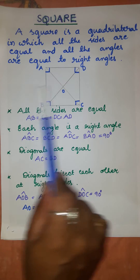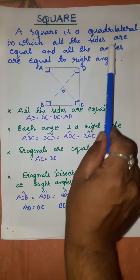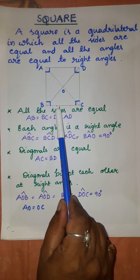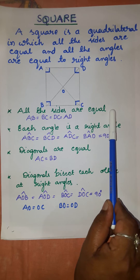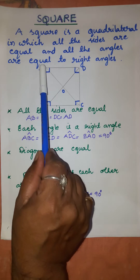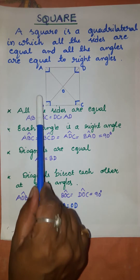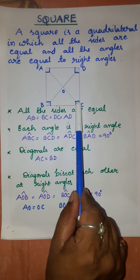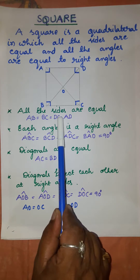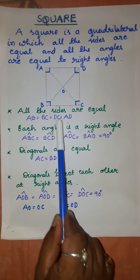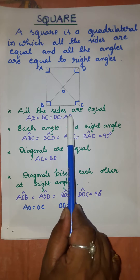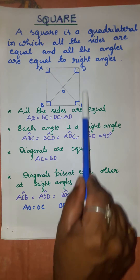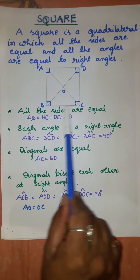Let us focus on the important properties of a square. All the sides of a square are equal. Side AB is equal to side BC, side BC is equal to side DC, and side DC is equal to side AD. So, all the sides are equal.